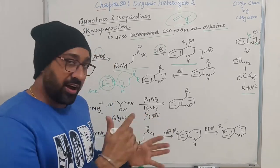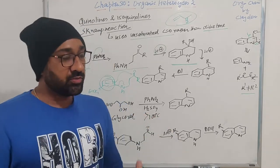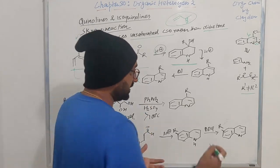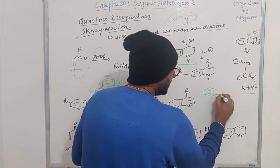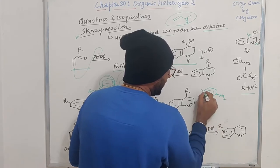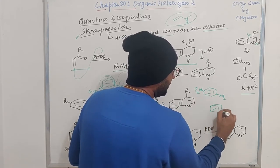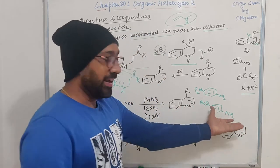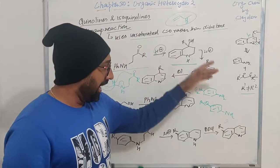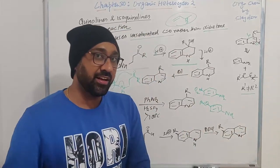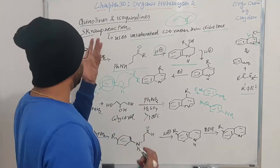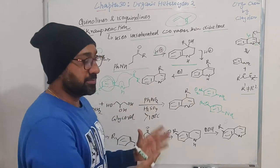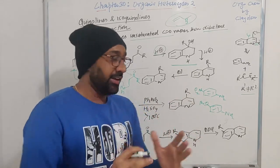These are some of the basics that could be asked in interviews or exams. For example, you could be given three anilines — one with NO2, one with OMe, and a simple aniline — and asked to arrange them in increasing order of reactivity in the Skraup reaction. If you understand this mechanism, you will be able to correctly solve the problem.